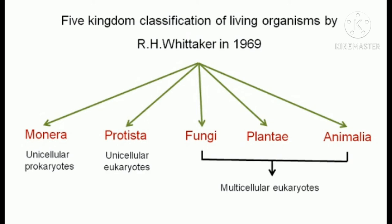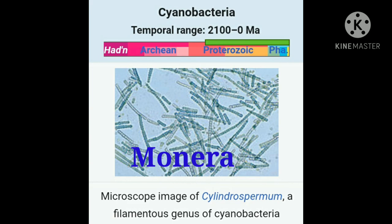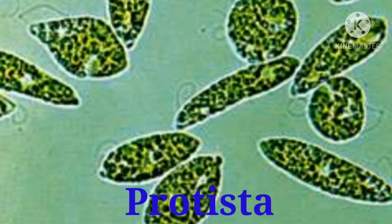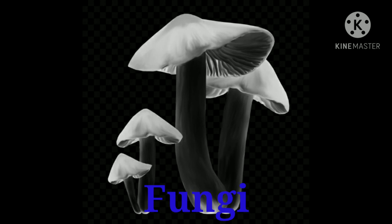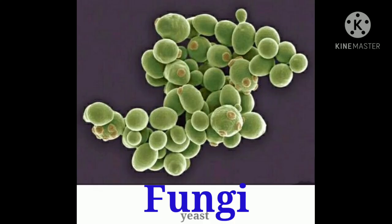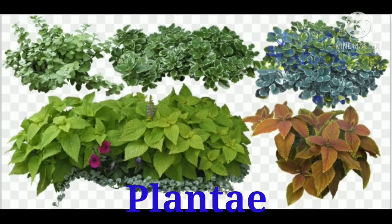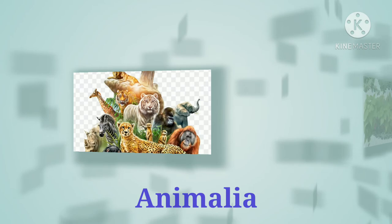According to Whittaker's five kingdom concept, bacteria and cyanobacteria are included in kingdom Monera. All single-celled eukaryotes — that is, microalgae and protozoa — are included in kingdom Protista. Heterotrophic eukaryotic, multinucleate, multicellular, and unicellular fungi — for example, molds, mushrooms, puffballs, yeast, etc. — are included in kingdom Fungi. Multicellular green plants and red algae are included in kingdom Plantae. Multicellular animals are included in kingdom Animalia.